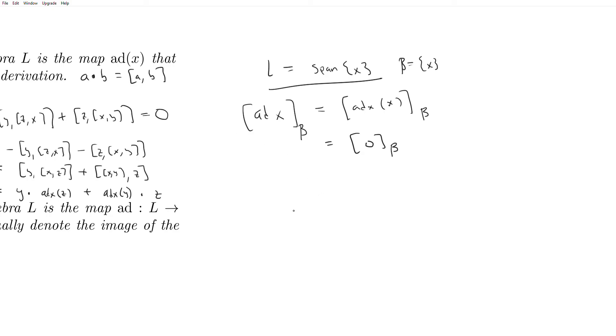So the adjoint representation on a one-dimensional Lie algebra is 0. And in general, the adjoint representation on an abelian Lie algebra is also 0. If we had X, this was a span of like 100 vectors, the adjoint is always 0 no matter what, because what we're saying in your abelian is that when you bracket any two things, you get 0. So it would follow that any adjoint would be the 0 matrix.